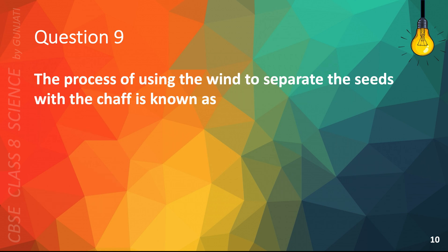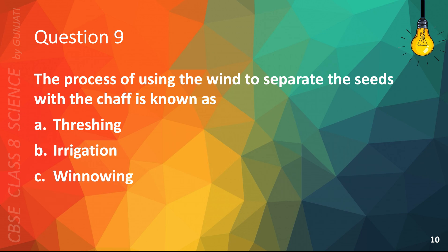Question 9. The process of using the wind to separate the seeds with the chaff is known as: A. Threshing, B. Irrigation, C. Winnowing, or D. Sowing. The correct answer is C. Winnowing.